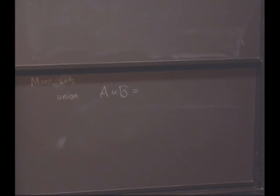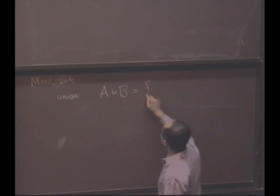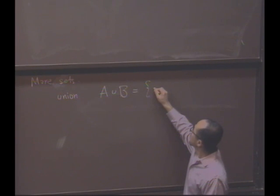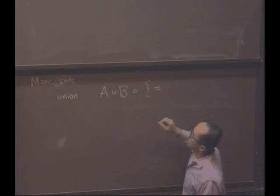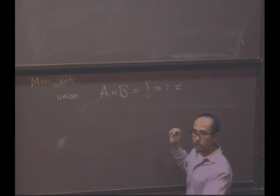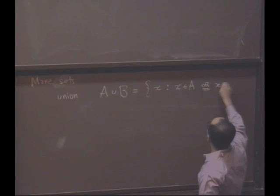What is the union of A and B? If I were to write it instead of listing the elements, in terms of a property, what should I do? The set of all x such that x is in A, or x is in B.